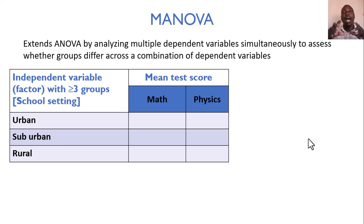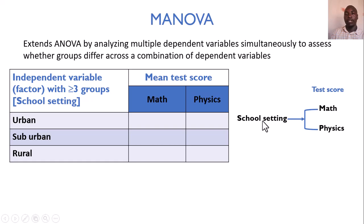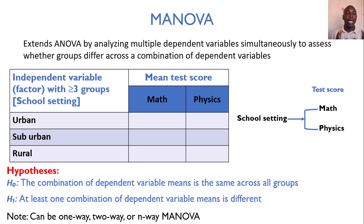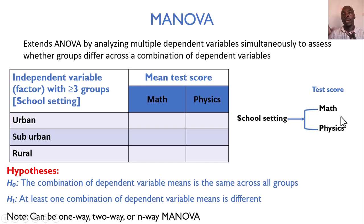In our example, the outcome variables — performance in math and performance in physics — can be as many as your study entails. We are looking at the effect of an independent categorical variable, school setting with three levels, on multiple numerical outcomes: scores in math and scores in physics. The null hypothesis states that the combination of dependent variable means is the same across groups, while the alternative tells us that at least one combination of dependent variable means is different. MANOVA essentially creates one composite variable out of those multiple outcome variables and uses that for analysis.